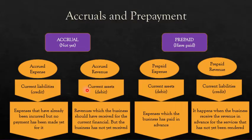For accrued revenue, it is something that you should have received but you haven't received yet — the other person is owing you something. So it is a current asset, which means in the journal entry it should be on the debit side. Whenever you want to do a journal entry, you debit accrued rent revenue, for example, and then you credit rent revenue.